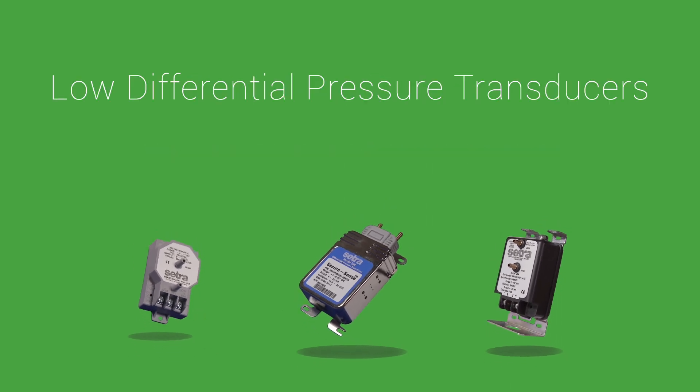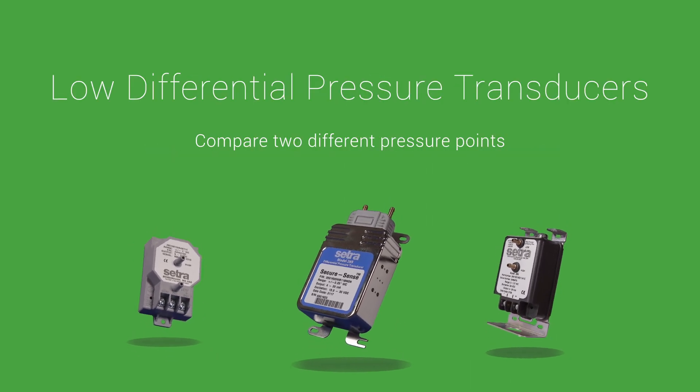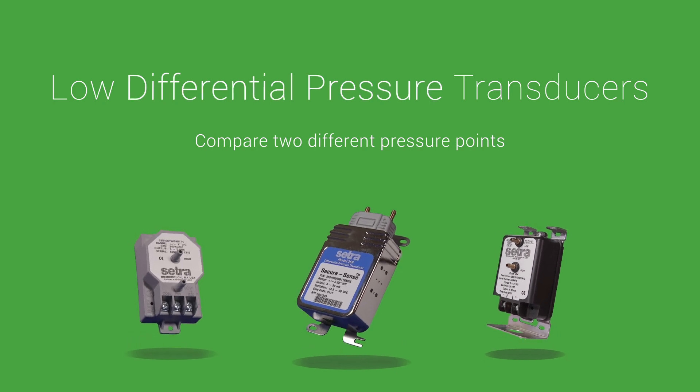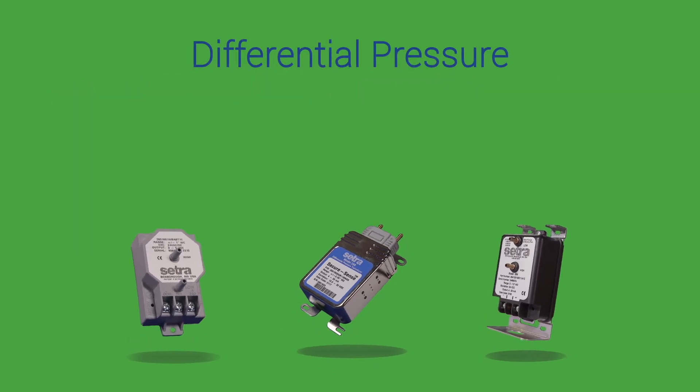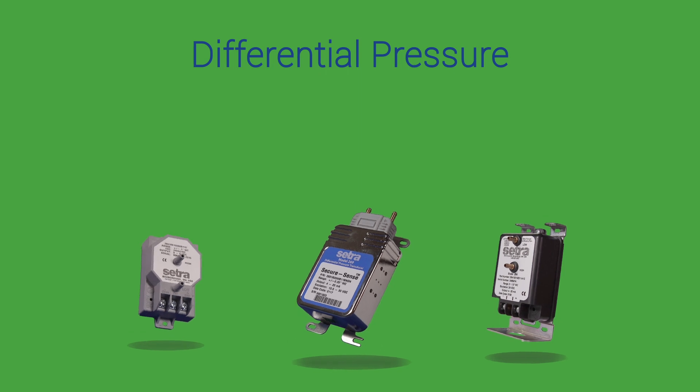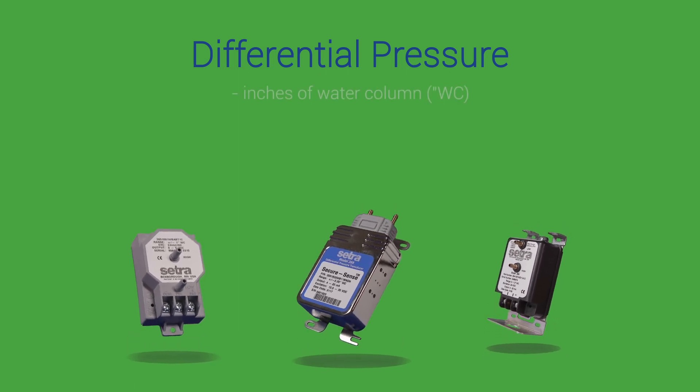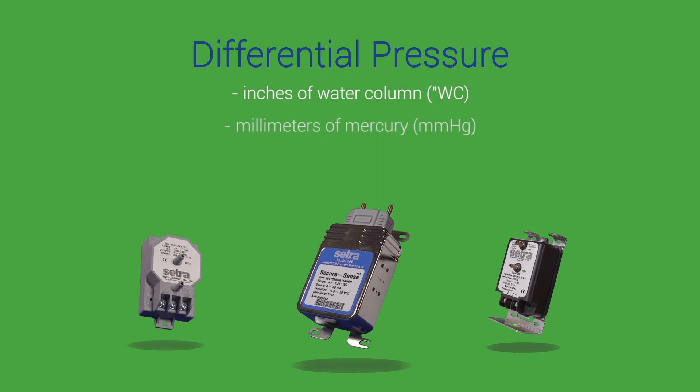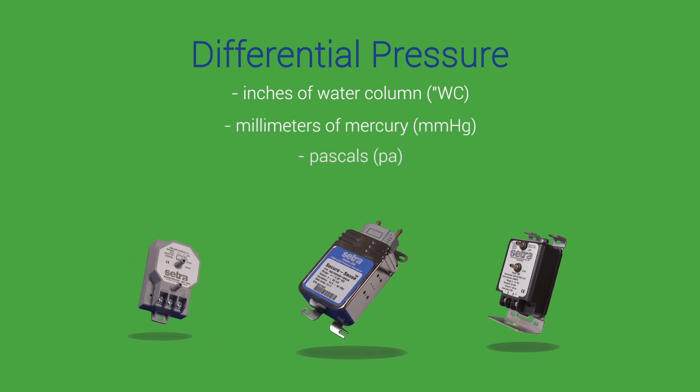Differential pressure transducers compare the pressure in one space to the pressure in another space. The difference between the two spaces is called the differential pressure. Low differential pressure is typically expressed in inches of water column, millimeters of mercury, or pascals.